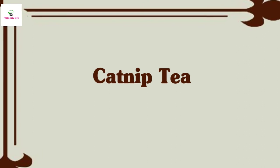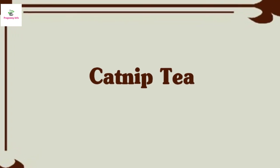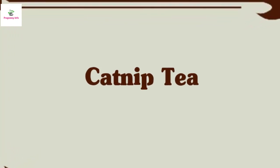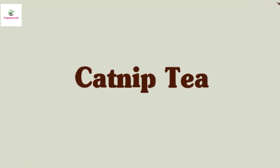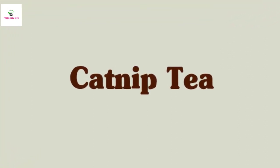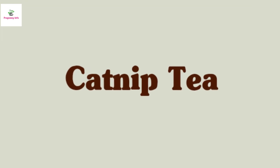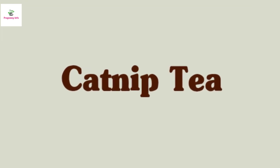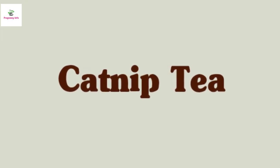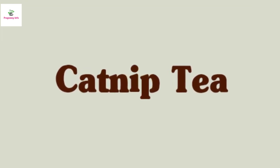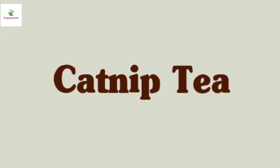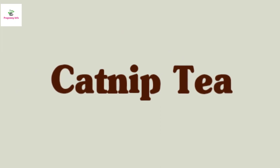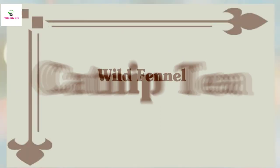Catnip tea: catnip has a calming agent that relaxes the nerves and can also reduce fever. Add a small amount of catnip to chamomile tea and freeze the mixture into a popsicle or soak into a washcloth. It is totally safe and very gentle to the baby's system.